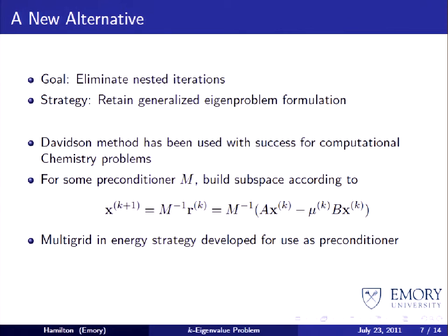To fill the role of the preconditioner — which in some sense approximates the action of matrix A — we spent a very long time developing a multigrid-in-energy approach. This was very novel to the field: multigrid methods have been used in transport for the space and angle portions of the phase space, but never really for the energy component. We spent a long time developing this method, identifying smoothers that work well for it, and doing Fourier analysis to select appropriate parameters.